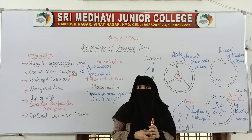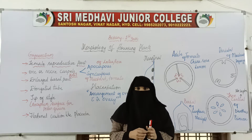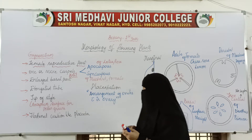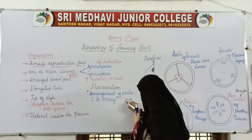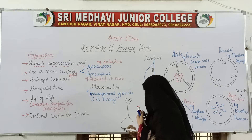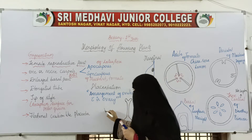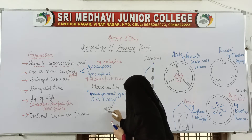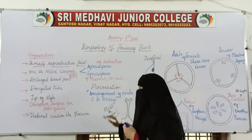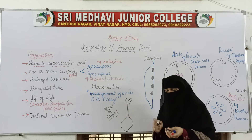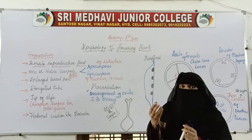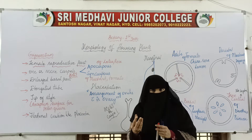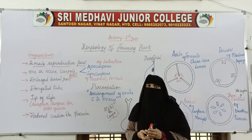Just like the androecium is comprised of stamens and each stamen consists of two parts — anther and filament — in the gynoecium, each pistil consists of three parts. There can be only one pistil or carpel, or there can be more than one.